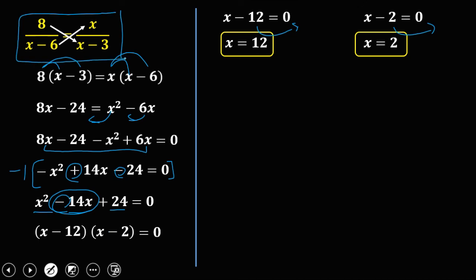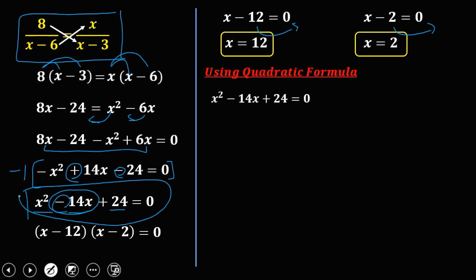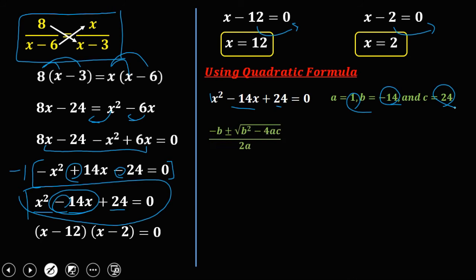Now solving the same quadratic equation using the quadratic formula. We identify a equals 1, b equals negative 14, and c equals 24 — where a is the coefficient of x squared, b is the coefficient of x, and c is the constant. Substituting into the formula: negative b plus or minus the square root of b squared minus 4ac, over 2a — we get negative negative 14, plus or minus the square root of negative 14 squared minus 4 times 1 times 24, over 2 times 1.